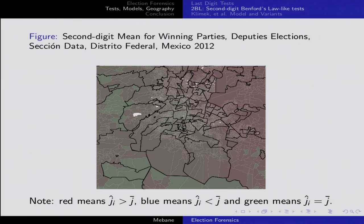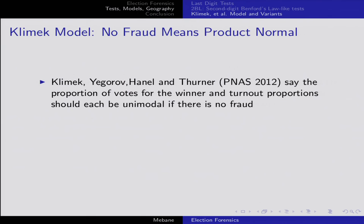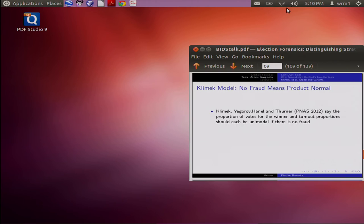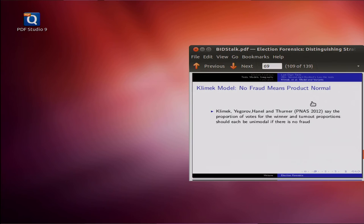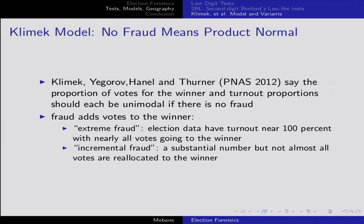In Mexico City — the federal district — it's mostly red and seems to be red if you back away to look at all of Mexico. But I want to say a few words about Klimek et al.'s model. They claim there should be unimodal turnout and unimodal winner vote proportions if an election is not fraudulent, and they have a specific claim about what fraud is. I love this model even though it has lots of problems — the idea of asserting positively what fraud looks like is a huge advance. They distinguish extreme fraud and incremental fraud.